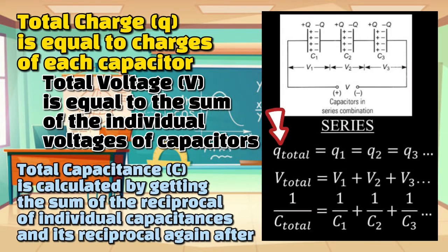For capacitors in series, the total charge Q is equal to the charges of each capacitor. The total voltage V is equal to the sum of the individual voltages of capacitors. And for the total capacitance, it is calculated by getting the sum of the reciprocal of individual capacitances and its reciprocal again after.